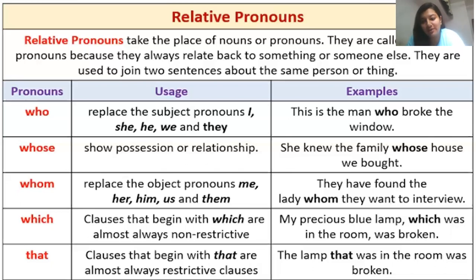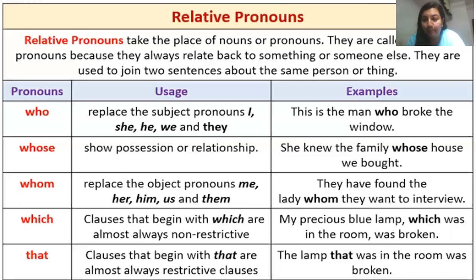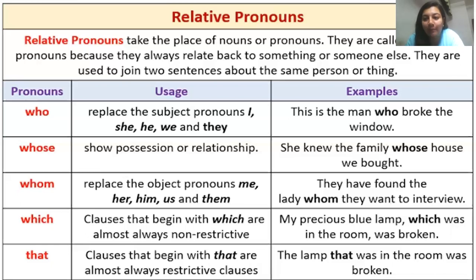Clauses that begin with 'which' are almost always non-restrictive — there is no limitation and you can add more information about the noun. For example: 'My precious blue lamp, which was in the room, was broken' — here 'which' relates back to the lamp and adds extra detail about its color and location. Clauses beginning with 'that' are almost always restrictive — limited information is given. 'The lamp that was in the room was broken' — only the essential fact is stated, without the additional detail about color.